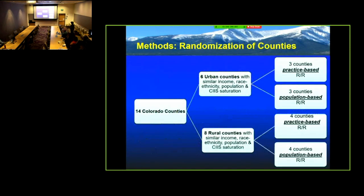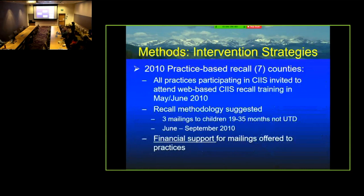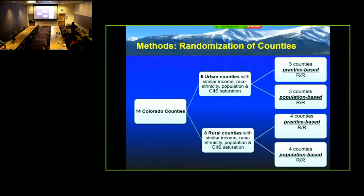Our objectives were to directly compare the effectiveness and cost-effectiveness of population-based and practice-based approaches. We randomized 14 counties — entire counties, six urban and eight rural — using stratified randomization because rural and urban are quite different in terms of healthcare delivery. We also used covariate constrained randomization: there were something like 5,000 potential randomizations, we identified about 5 that were very good, and we randomly picked one of those to assign intervention versus control.